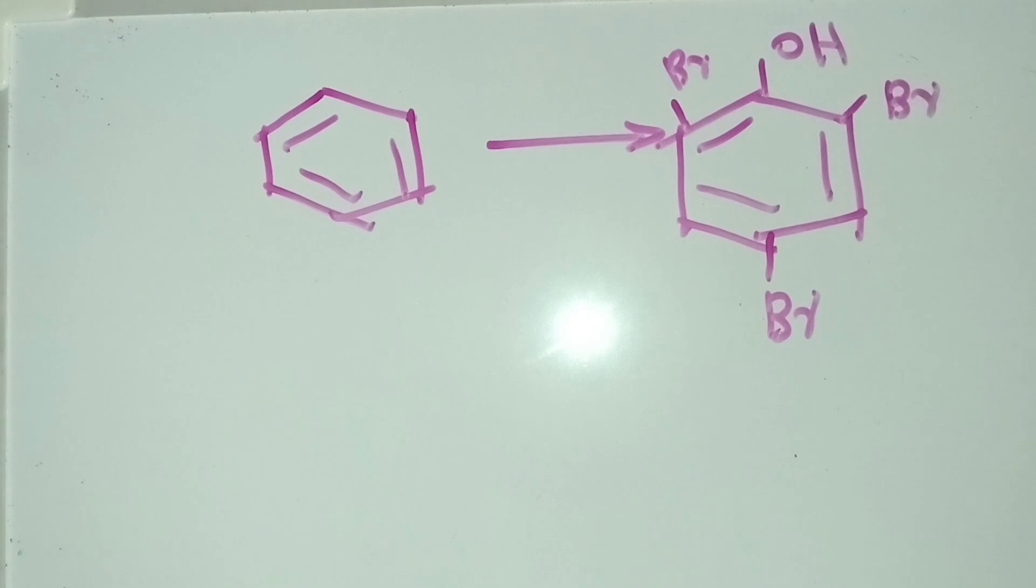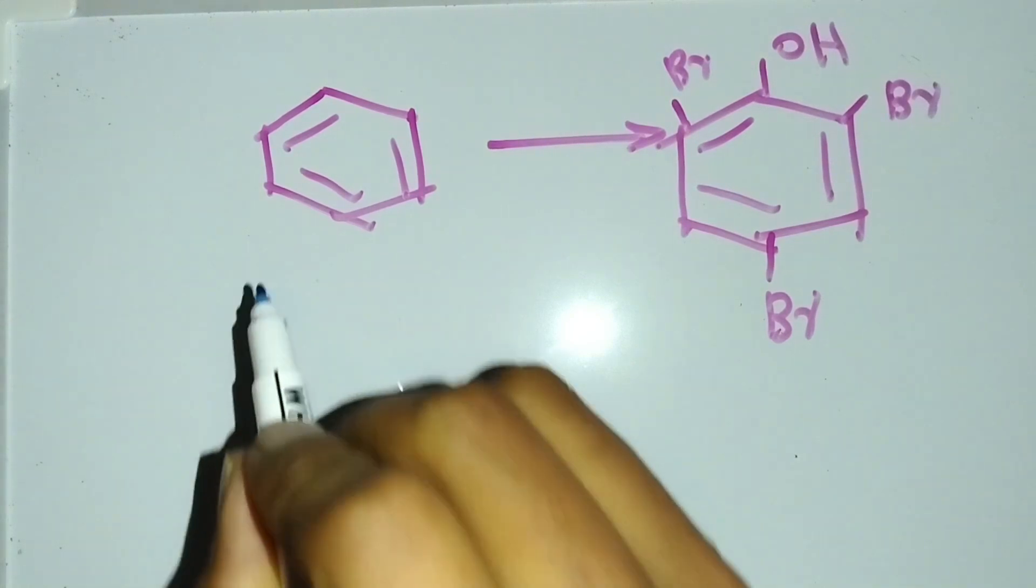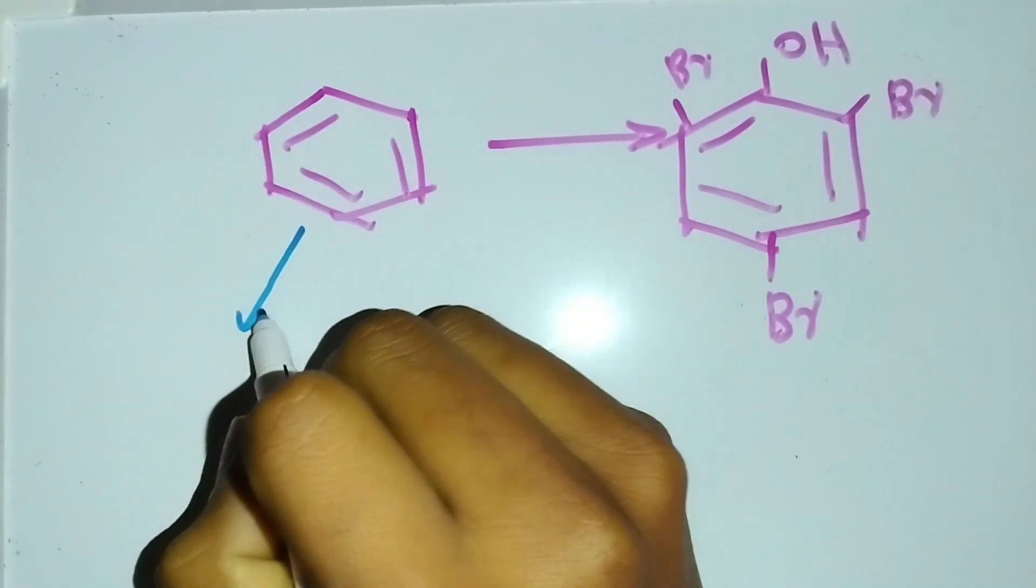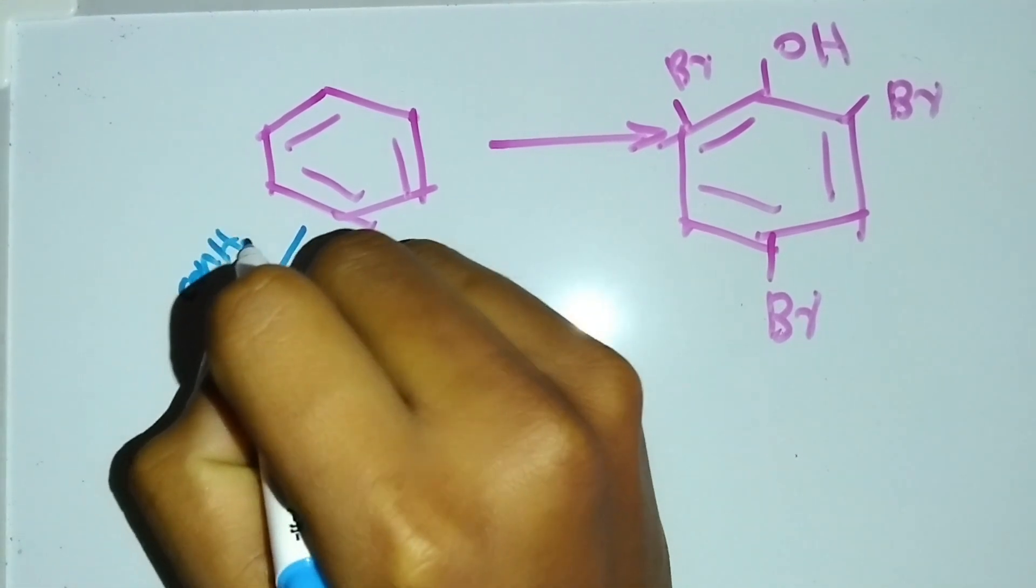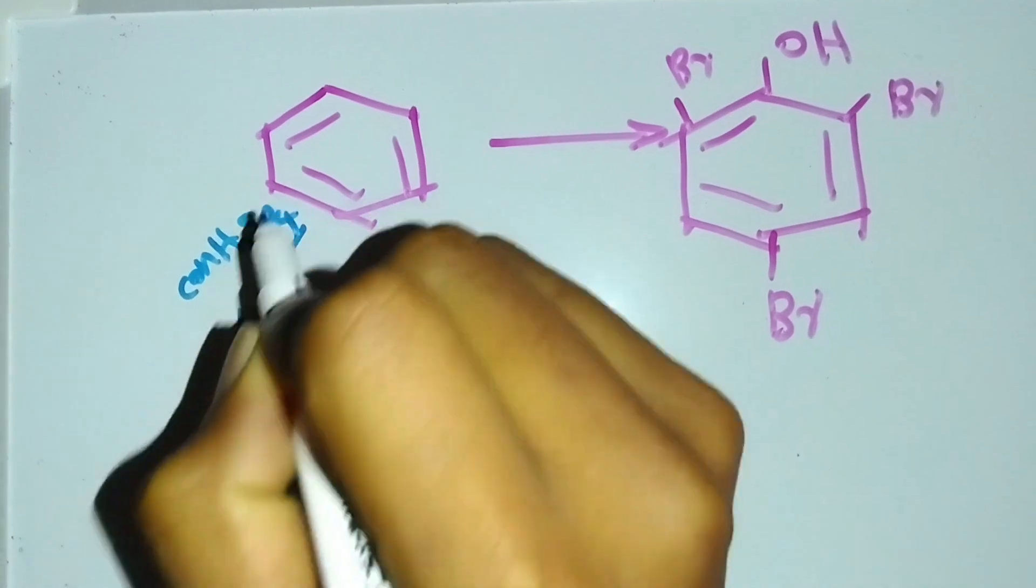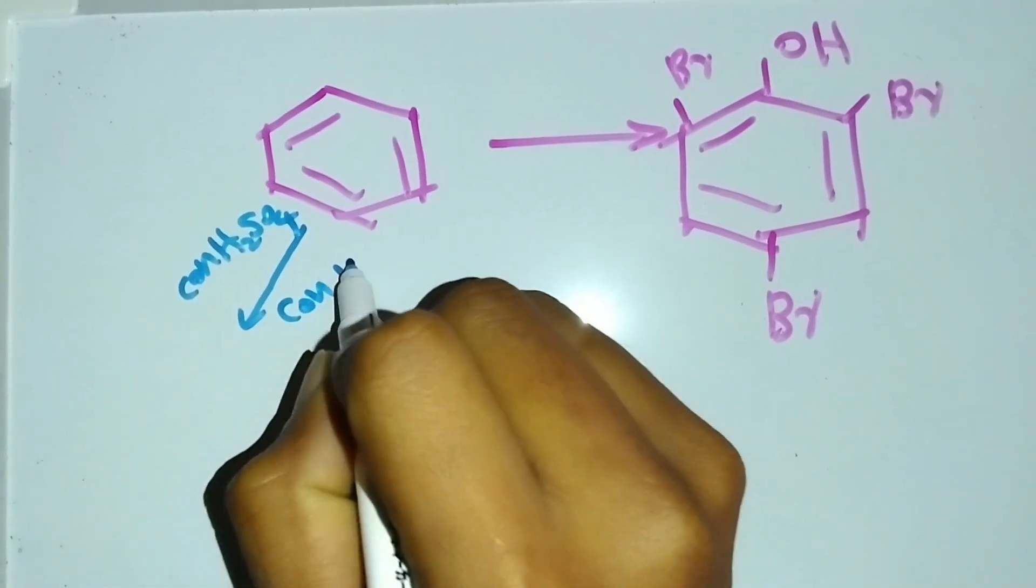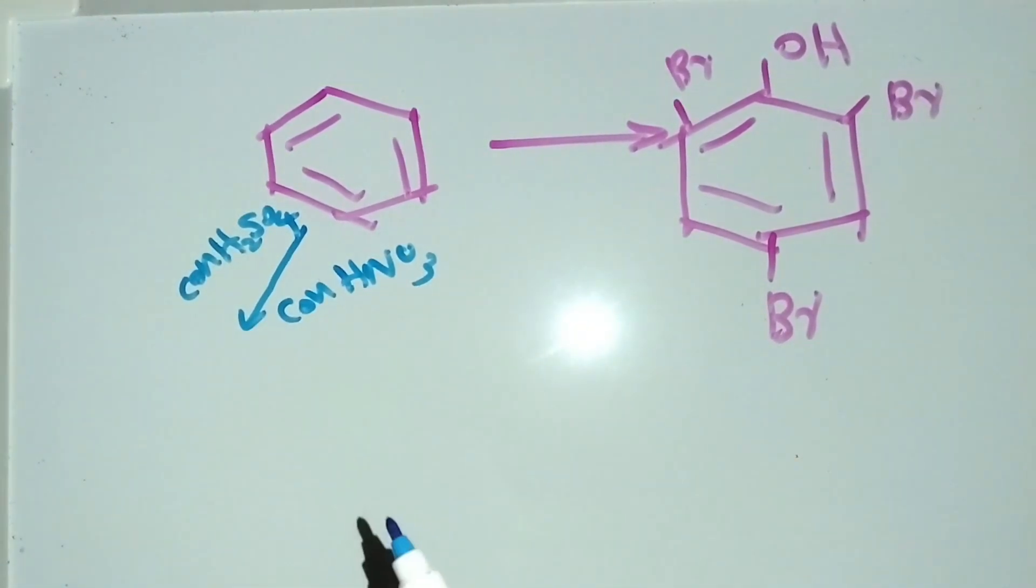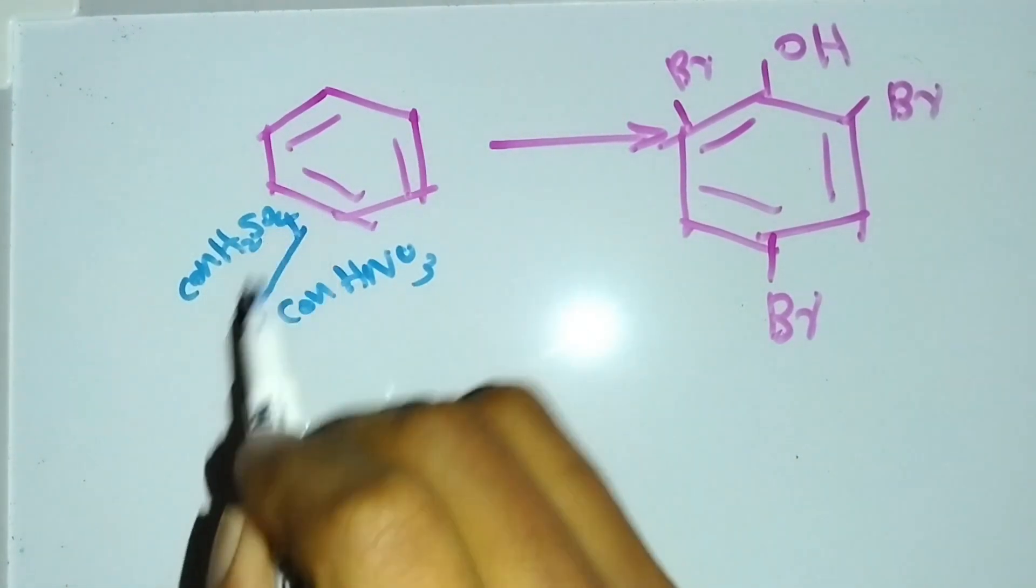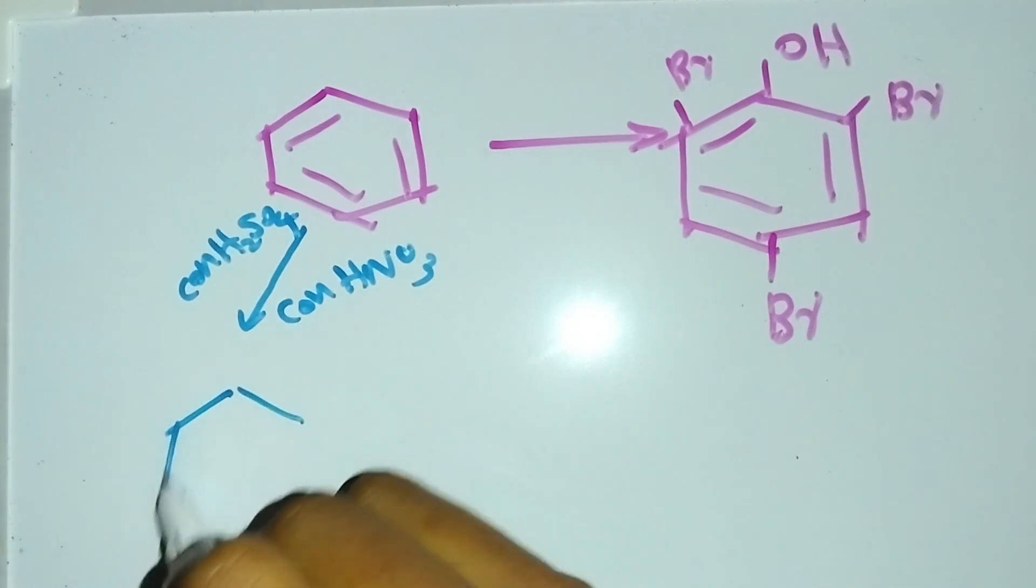For making aniline, my first step is I have to create nitrobenzene. For making nitrobenzene, I have to use concentrated H2SO4 and concentrated nitric acid. This reaction will provide us nitrobenzene.